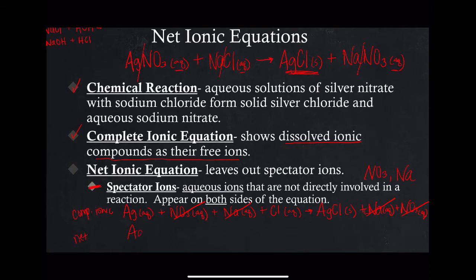In our net ionic equation, we'll rewrite the complete ionic equation leaving out those spectator ions. What I've got left is silver aqueous plus chlorine aqueous yields silver chloride solid, and that is our net ionic equation. Everything should still be balanced here. So let's look at a couple of other examples.